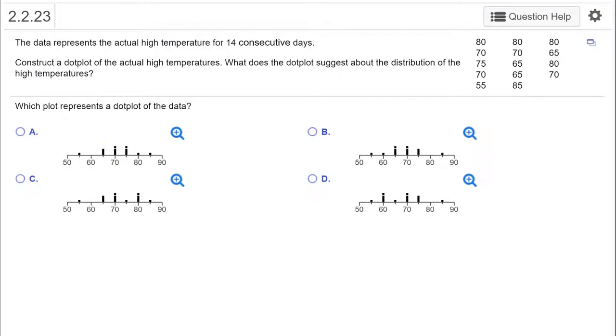Hi, this is Dr. Don. I have a problem out of chapter two on descriptive statistics. In this problem, we're asked to create a dot plot of these actual high temperatures for 14 consecutive days that we're given. Then we're given some choices as to which of these gives us the dot plots.